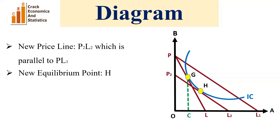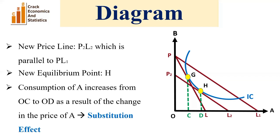You can see that before the fall in the price of commodity A, the consumption of commodity A is OC, and after the reduction in the price of commodity A the consumption is OD. So the consumption of A increases from OC to OD as a result of the change in the price of A — and that is the substitution effect. The consumer reduces the consumption of commodity B and increases the consumption of commodity A, substituting A for B because the price of A has gone down.